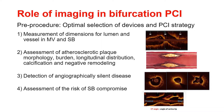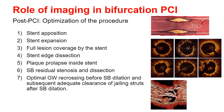Assessment of the risk of side branch compromise. In post-PCI, optimization of procedure is crucial for better clinical outcome. The following should be assessed by imaging: stent apposition; stent expansion; full lesion coverage by the stent; stent edge dissection; plaque prolapse inside the stent; side branch residual stenosis and dissection; optimal guidewire recrossing before side branch dilation; and subsequent adequate clearance of jailing struts after side branch dilation.